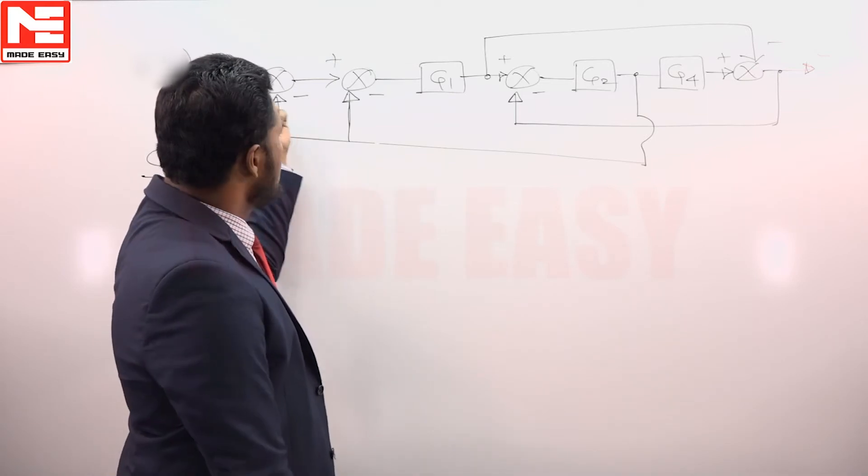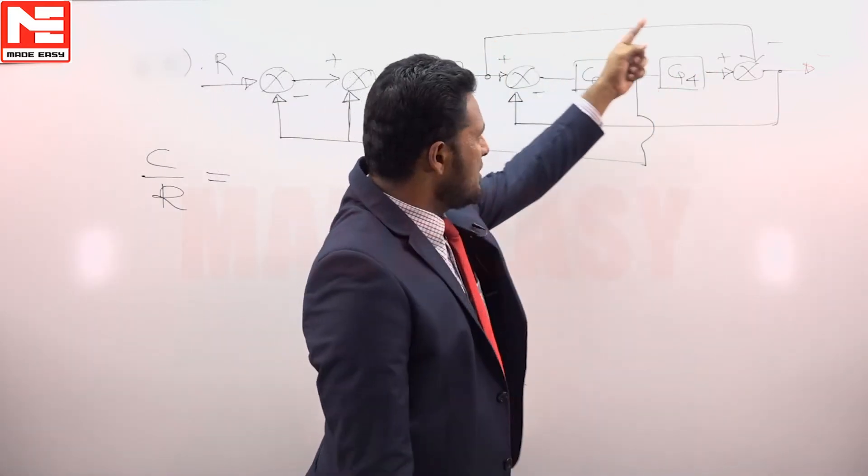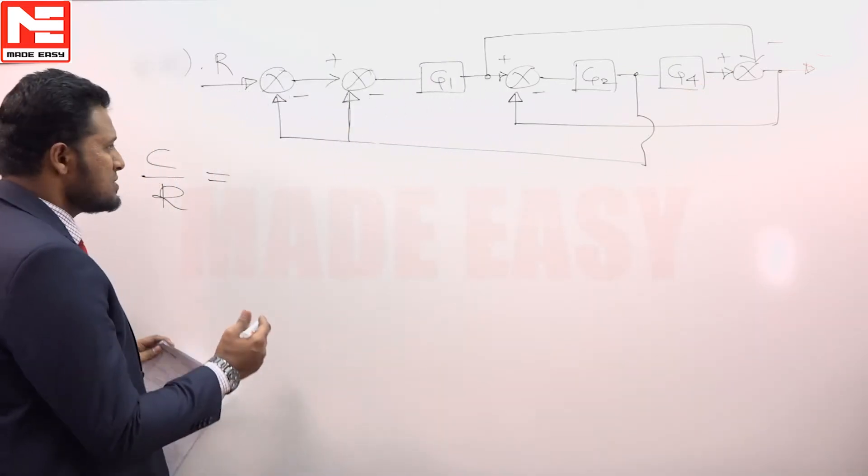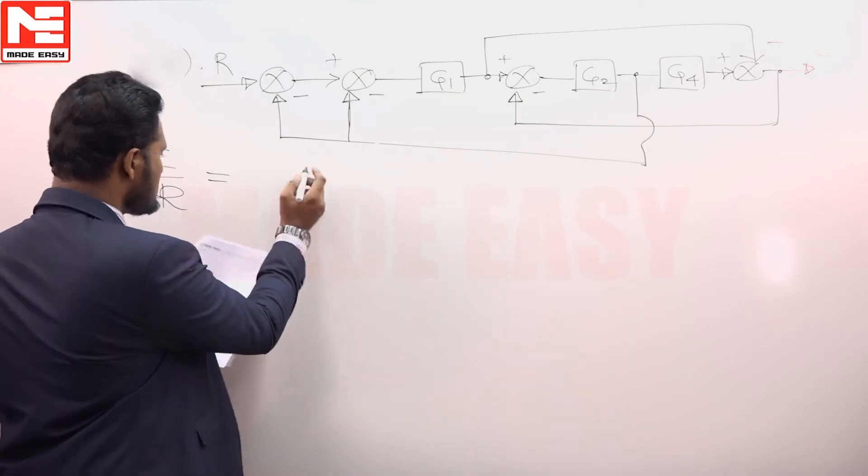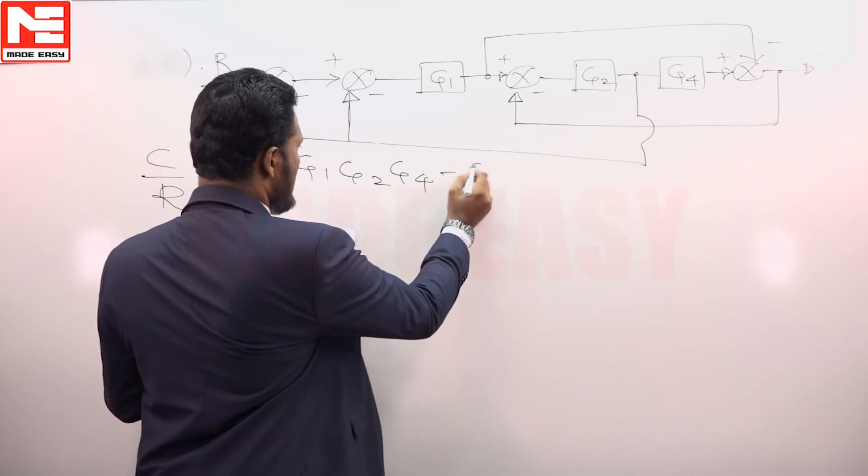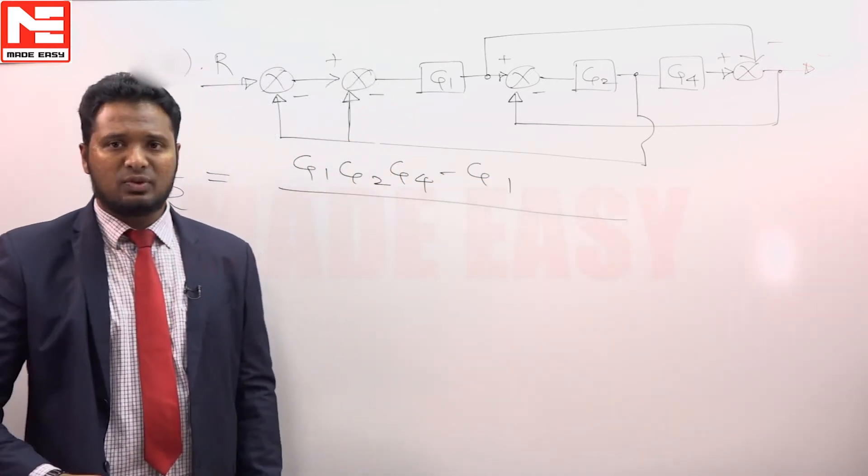It has two forward paths. G1 G2 G4 is one forward path. G1 into minus 1 is another forward path. There are two forward paths with gains G1 G2 G4 and minus G1, and there are totally 5 loops.